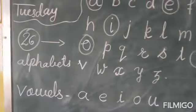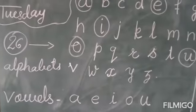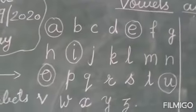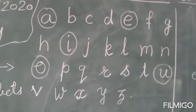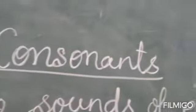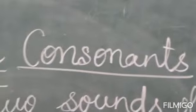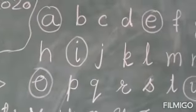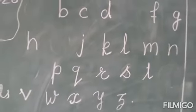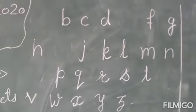So these are the vowels. And the remaining letters of the alphabet are called consonants. Remaining letters are called consonants.